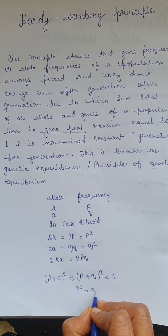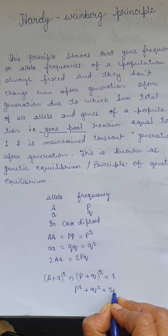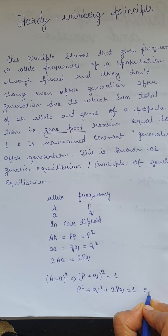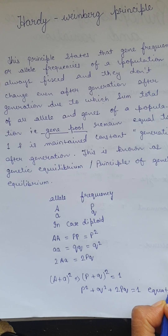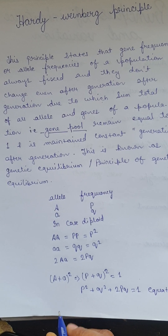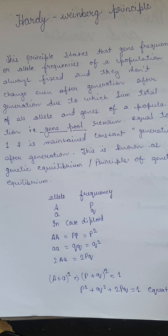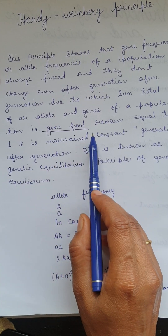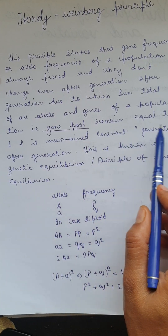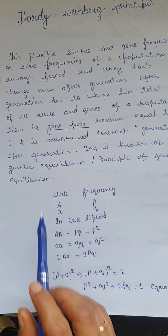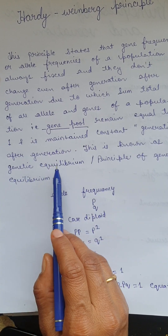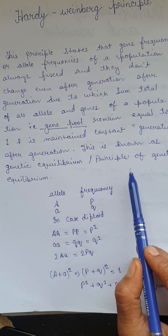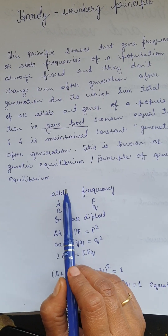This is the Hardy-Weinberg equation, which states that the sum total of all alleles and genes of a population — that is your gene pool — remains equal to 1, and is maintained constant generation after generation. This is known as genetic equilibrium, also called the principle of genetic equilibrium.